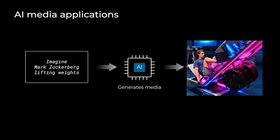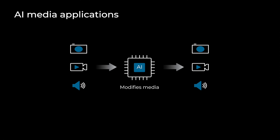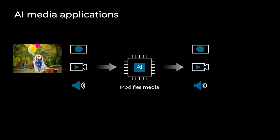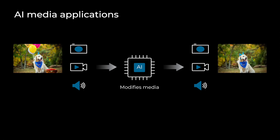For instance, at Meta we have MovieGen, where you can send a prompt to MovieGen and they can generate a whole video or an image about what you are describing in that prompt. And finally, there are other types of models that modify the media. For instance, we can send a video or an image of a dog with some balloons and a table, and the model can modify that image or video and remove the balloons on the table.